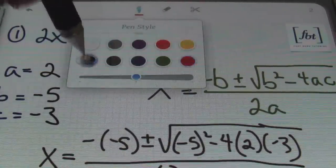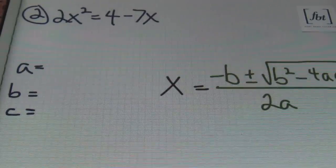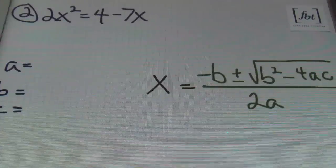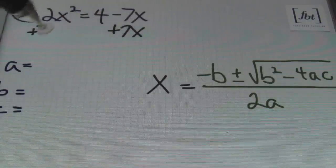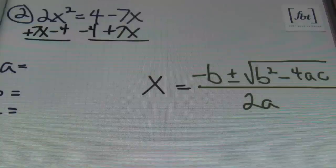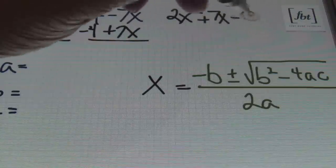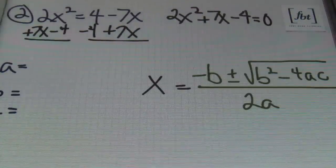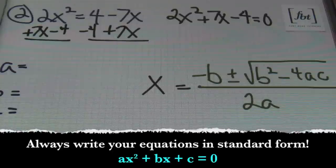Problem number two: 2x squared equals 4 minus 7x. Notice the equation is not set equal to zero — that's our first step. I'll add 7x to both sides and subtract 4 from both sides, rewriting the equation as 2x squared plus 7x minus 4 equals zero. This is its standard form of ax squared plus bx plus c, so I can get my solutions.